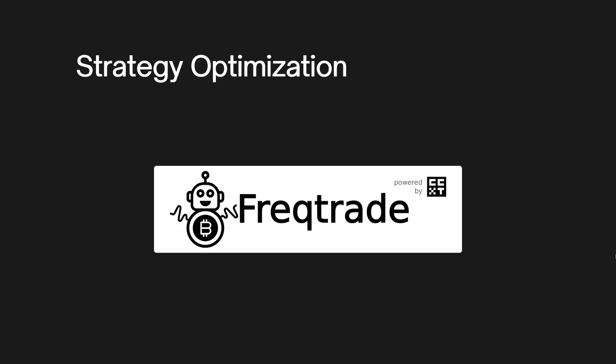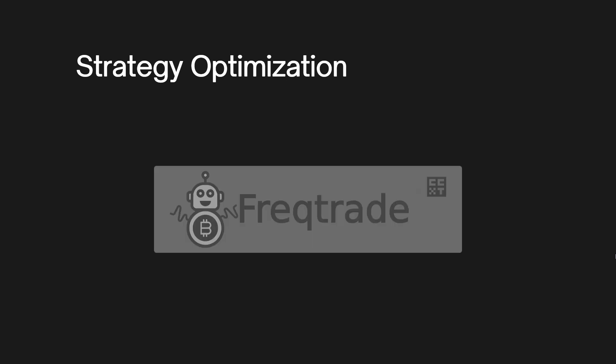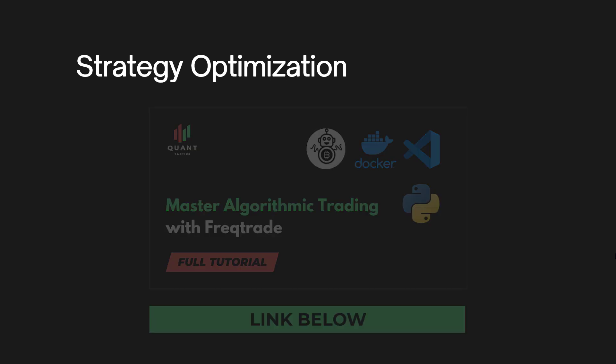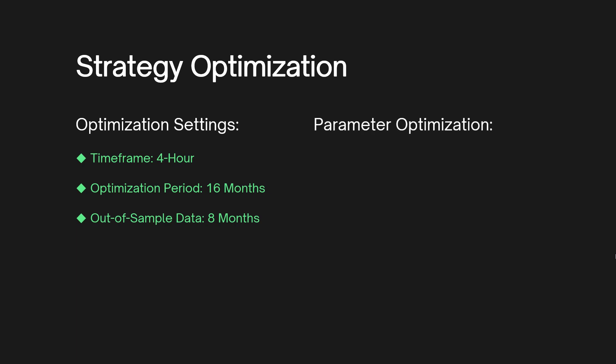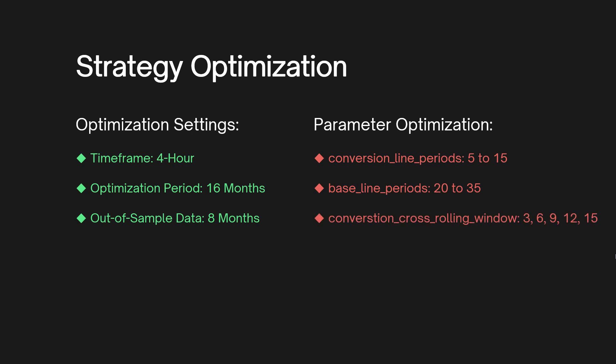Now that we've covered the strategy, let's dive into optimizing it for maximum performance using FreqTrade, a free, open-source crypto trading bot built with Python. We'll be testing on the 4-hour time frame, splitting the data into two parts: in-sample data covering 16 months, which we'll use to fine-tune the strategy's parameters, and out-of-sample data covering 8 months, for testing our optimized strategy on unseen data to check how robust it is. We'll focus on optimizing key parameters like conversion line periods, baseline periods, and the conversion cross-rolling window — which tests how far back the conversion line and baseline cross remains valid. For the exit strategy, we'll optimize the ATR multiplier. We'll use FreqTrade's hyperopt to find the best parameter combination, aiming for maximum profit with minimal drawdown.